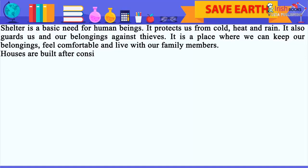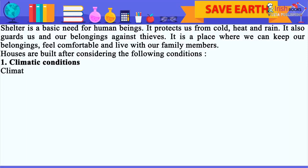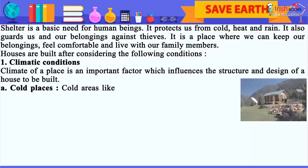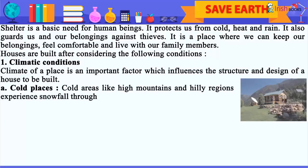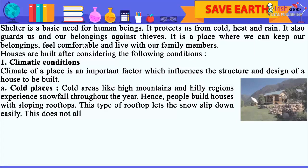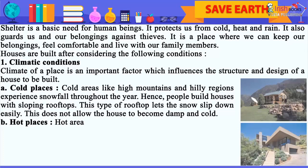Houses are built after considering the following conditions. 1. Climatic Conditions. Climate of a place is an important factor which influences the structure and design of a house to be built. A. Cold Places: Cold areas like high mountains and hilly regions experience snowfall throughout the year. Hence, people build houses with sloping rooftops. This type of rooftop lets the snow slip down easily and does not allow the house to become damp and cold.